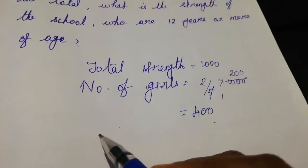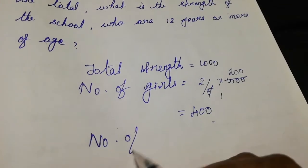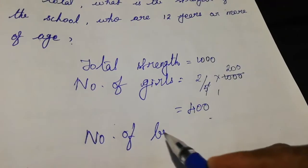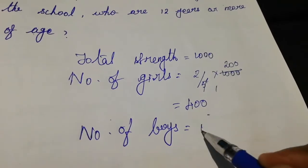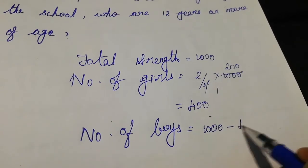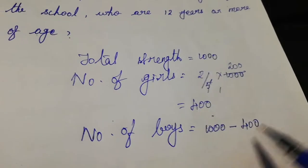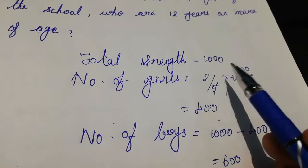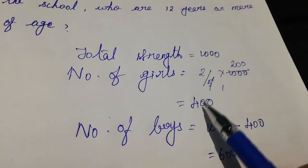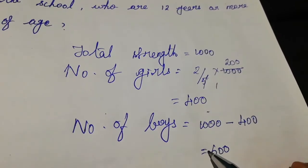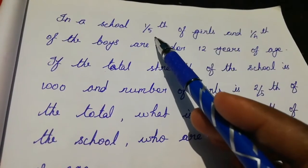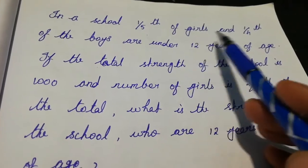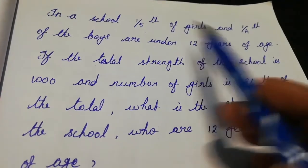Cancel by five — that gives 200 into 2, which is 400. So among 1000 students, 400 students are girls. Then the remaining are boys. Number of boys is equal to 1000 minus 400, that is 600. So total students: 1000, girls: 400, boys: 600.